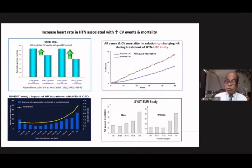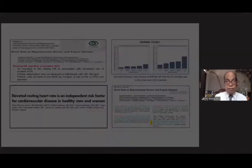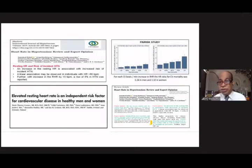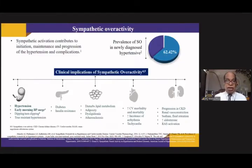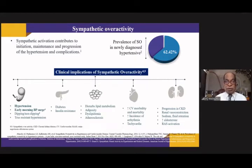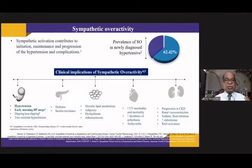The SISTER study shows all-cause mortality increasing with heart rate, both in men and women. From the FINRIS study, for each 15 beats per minute increase in resting heart rate, the hazard ratio for cardiovascular mortality is 1.24 in men and 1.32 in women. Sympathetic drive initiates and perpetuates hypertension, is responsible for morning surges, may produce non-dippers, has adverse effects on diabetes and insulin resistance, disturbs lipid metabolism, and increases cardiovascular morbidity, mortality, arrhythmias, and renal disease.